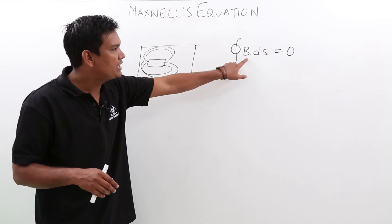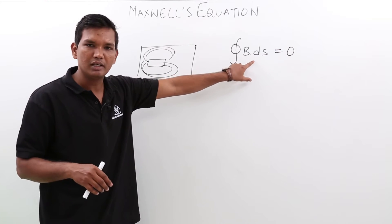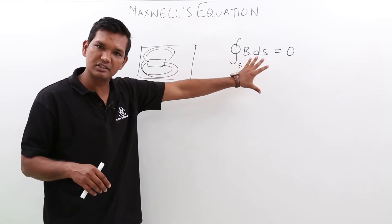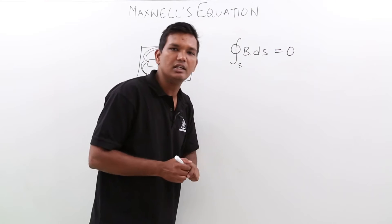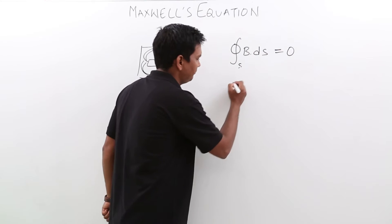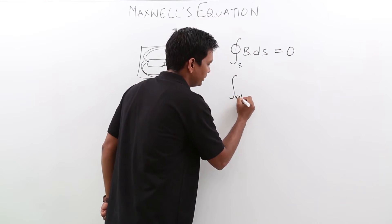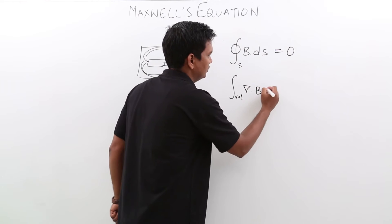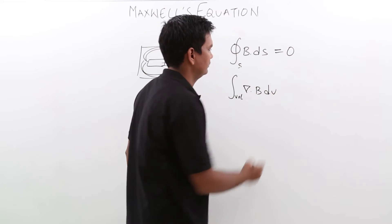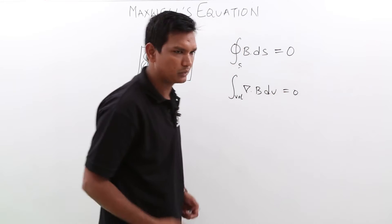Can I say that B·ds is nothing but I can relate this with the divergence also, because if I apply the Gauss divergence theorem on the same, I will have over the volume integral ∇·B dV equal to 0. I am just stating that equation.